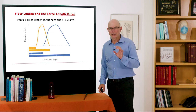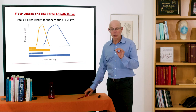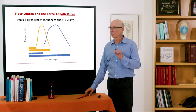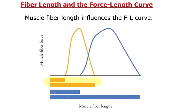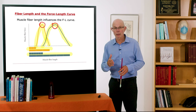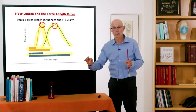Fiber length — specifically optimal fiber length — influences the force-length curve. Consider two muscle fibers: one in orange with three sarcomeres and one in blue with six sarcomeres. The orange fiber's force-length curve starts at a shorter length and has a relatively short span. The blue fiber begins developing force at longer lengths and has a broader force-length curve. Their peak forces are the same because we've only changed the number of sarcomeres in series. So the number of sarcomeres in series profoundly influences the force-length curve.